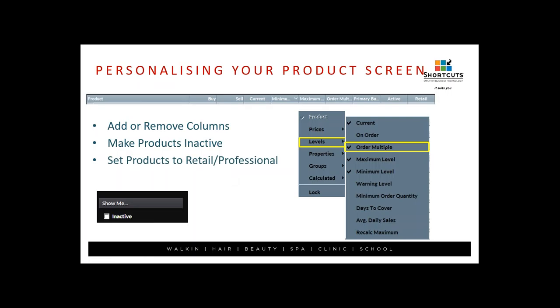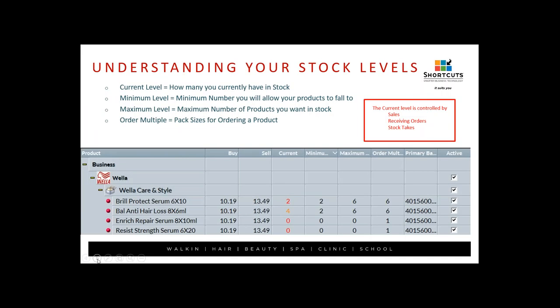You can also set products to Retail or Professional. Retail products are those we're allowed to sell at point of sale, whereas Professional stock means we cannot sell those products at point of sale — but we can still stock control and do ordering on them. At the end of each product line there is a dropdown for Professional or Retail. If you can't see that column, right-click, go into Properties, then Retail to bring it up. You can also lock your column selection so you don't have to redo it each time.